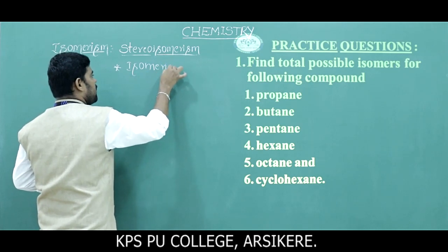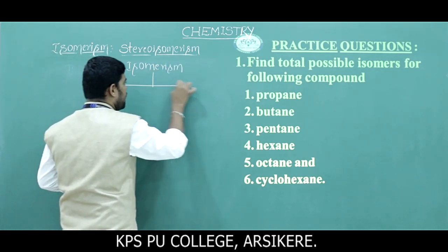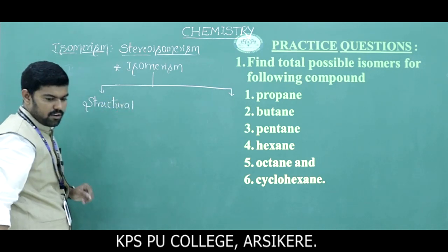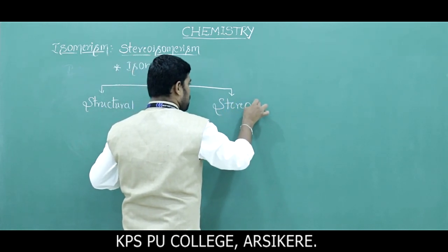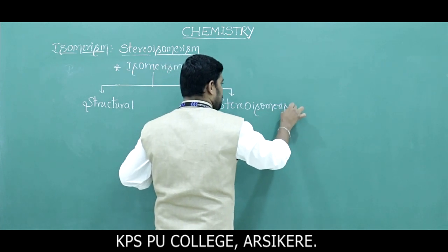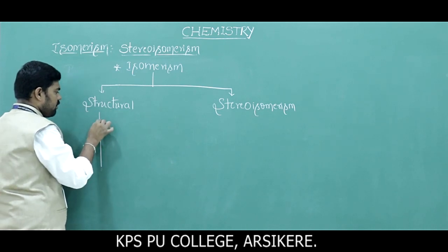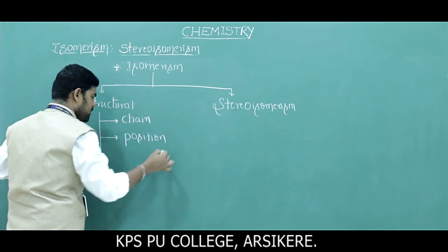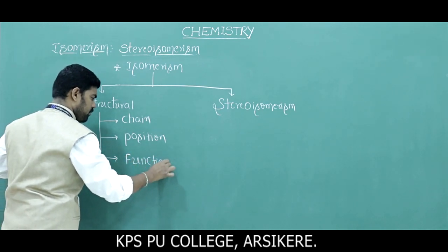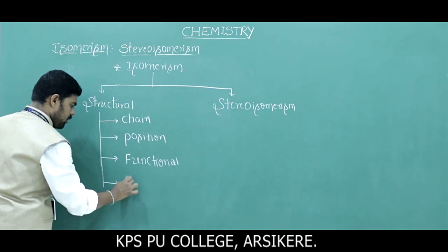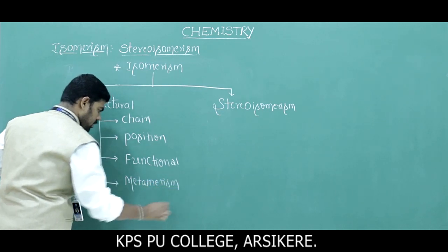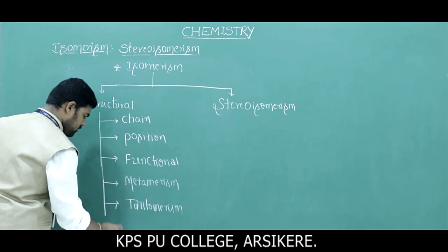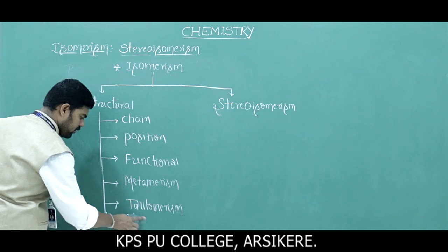There are two types of isomerism. The first one is structural isomerism, and the second one is stereo isomerism. In structural isomerism, there are further types: the first one is chain isomerism, second is position isomerism, third is functional isomerism, fourth is metamerism, fifth is tautomerism, and sixth is ring-chain isomerism.